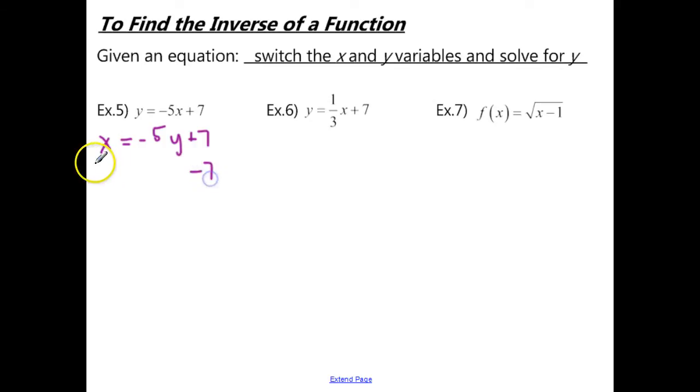And then we're going to solve the equation for y. So we want to subtract 7 from both sides. And then we have x minus 7 equals negative 5y. And then to isolate the y, divide both sides by 5. And so again, we can either put this entire side over one fraction or divide each of these individually. But don't forget to divide each term by negative 5.